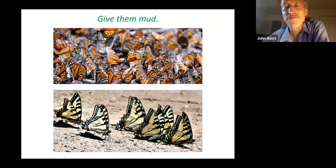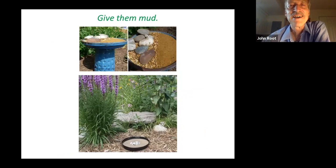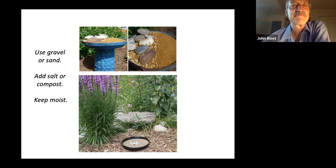Mud is something else. Males often need to do what's called puddling — they insert their proboscis into the mud and are able to ingest the minerals in mud, using those minerals to make the pheromones that attract females. When they mate with the females, they are able to pass those minerals onto the eggs and help them with their chances of survival. We can give butterflies mud with a repurposed birdbath or a saucer recessed into the ground — use gravel or sand, add salt or compost for the minerals, and keep it moist.